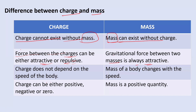The third difference is that charge does not depend on the speed of the body — charge is independent of speed, and there is no change in the charge of a body with a change in its speed. But mass changes with the speed of a body.